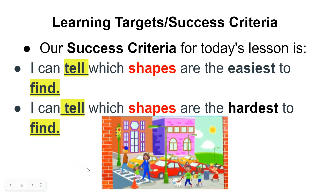I'm going to get a picture and look at it. Right away I see these rectangles — all these rectangles. Those were really easy to find. But some that are harder to find are like the 3D shapes, like cylinders or a cube. So I'm going to tell which I had an easy time finding and which were a little harder.